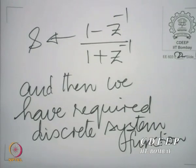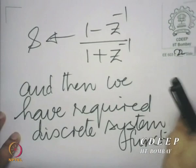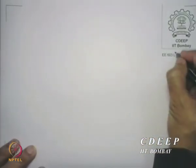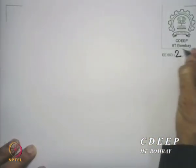Now, we shall look at the possibility of an equi-ripple passband and a monotonic stopband. We move on to what is called the Chebyshev approximation of filter design.